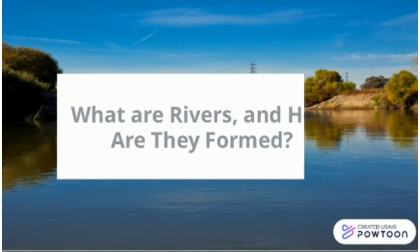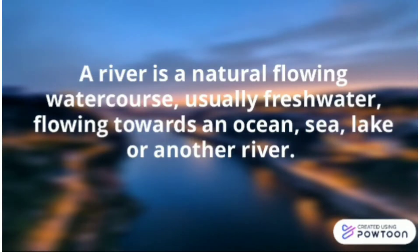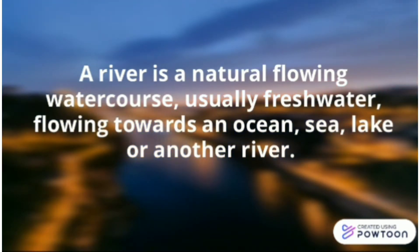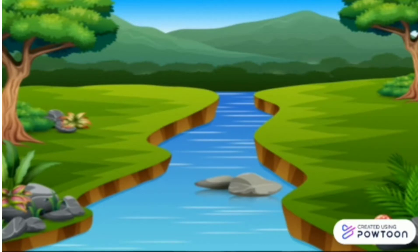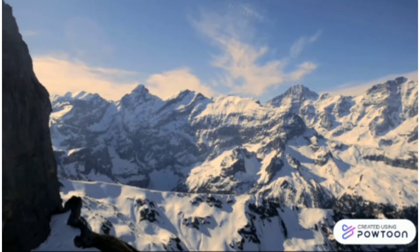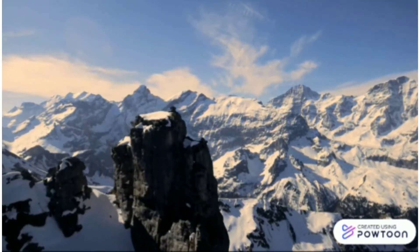So first of all, let's have a look at what rivers are and how they are formed. A river is a natural flowing water course, usually fresh water flowing towards an ocean, sea, lake or another river. A river forms from water flowing from a higher elevation to a lower elevation, all due to gravity. Most rivers originate higher up in the mountains.